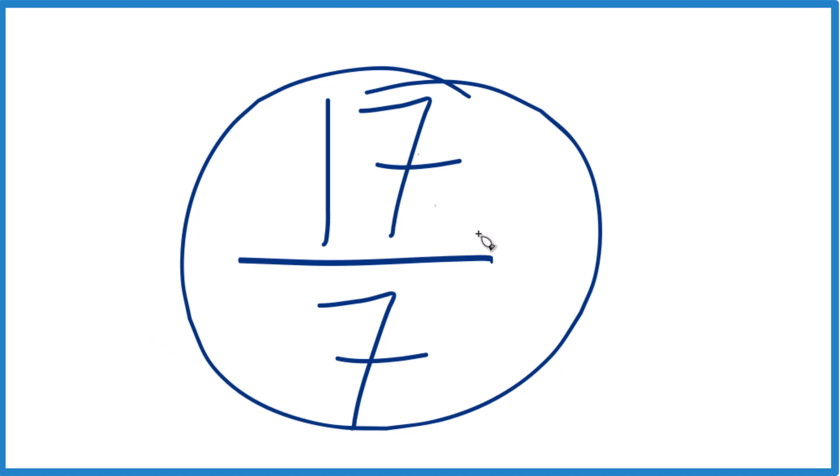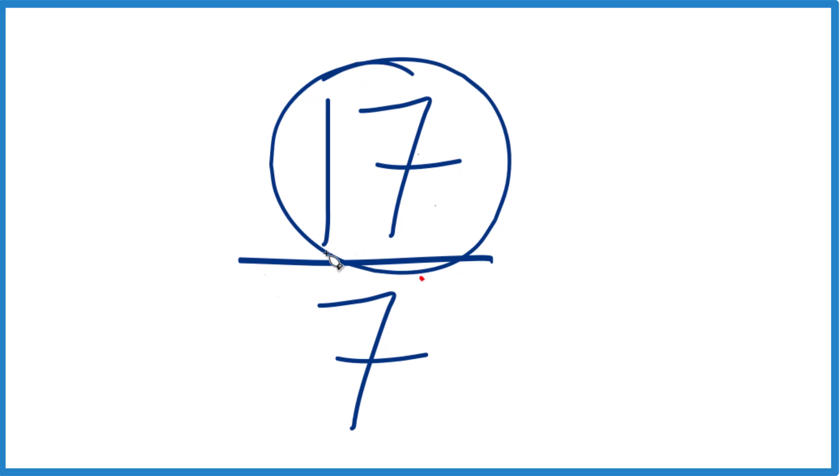We can't reduce this any further. But because it's an improper fraction, 17, the numerator, that's larger than 7, the denominator, we could write it as a mixed number. So let's do that.